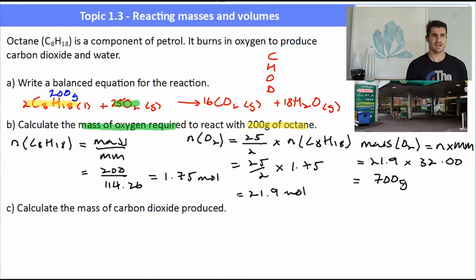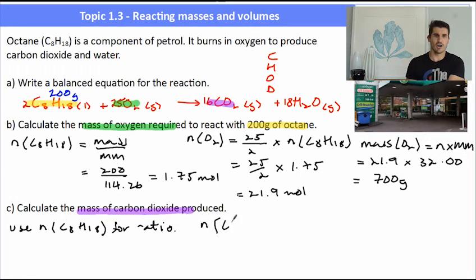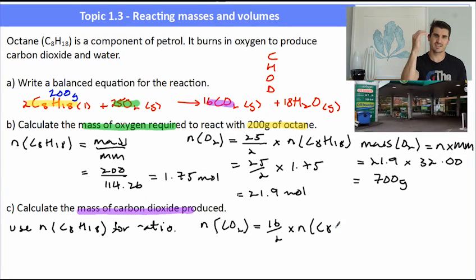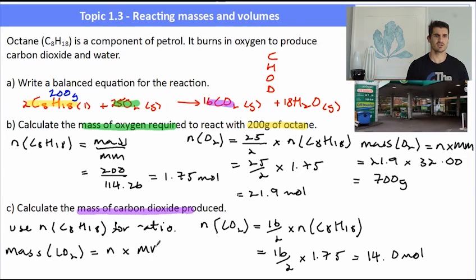For part C: calculate the mass of carbon dioxide produced. We're going to use the ratio again, starting with the thing given in the question — the number of moles of octane — and use the ratio between carbon dioxide and octane. The thing we want now is carbon dioxide, coefficient 16, over octane, coefficient 2. So it's 16 over 2 times the number of moles of octane, which is 1.75, giving us 14.0 moles. Mass of carbon dioxide equals moles times molar mass: 14.0 times 44.01, giving a mass of carbon dioxide of 616 grams.